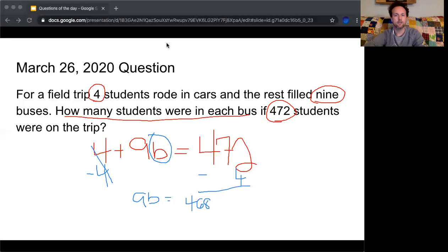From here, I'm going to divide both sides by nine. Leaving me with, if I take B equaling 468 divided by nine is 52.